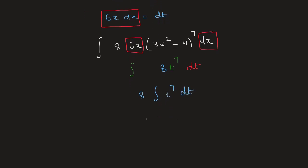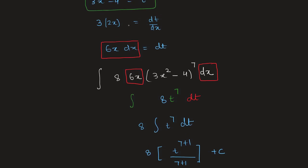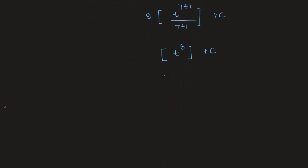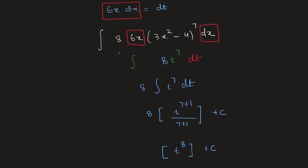Integrating t⁷ gives t⁸/8, so we get 8 · (t⁸/8) + c = t⁸ + c. Substituting back, t = 3x² - 4, so our answer is (3x² - 4)⁸ + c, which matches our original function.